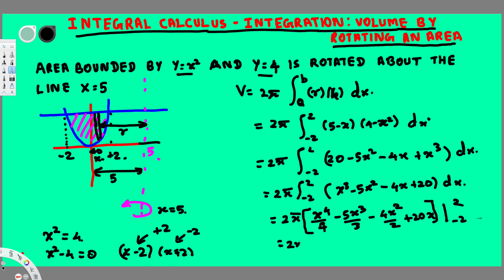Applying the upper limit x equals 2: 2⁴ is 16, so 16/4; then 5 times 2³ equals 5 times 8, giving 40/3; then 4 times 2² equals 4 times 4, giving 16/2 which is 8; and 20 times 2 equals 40.